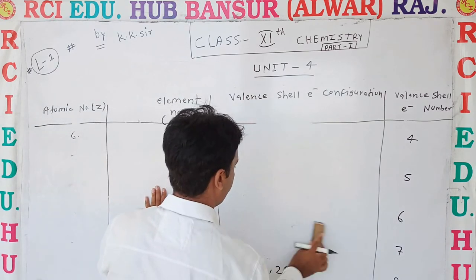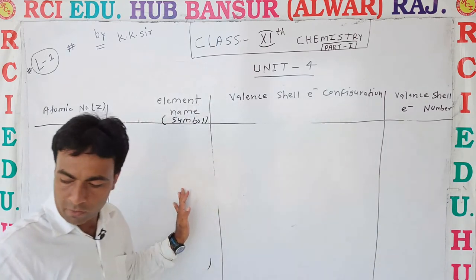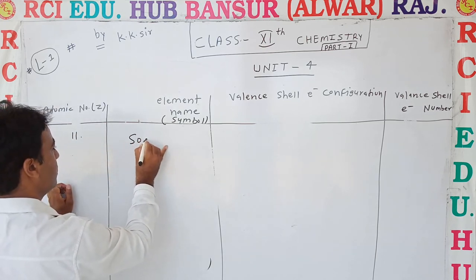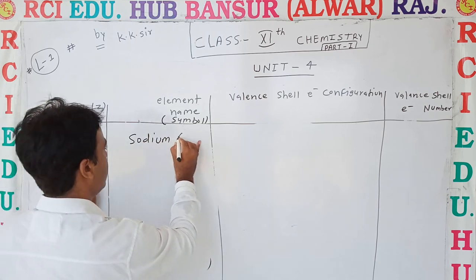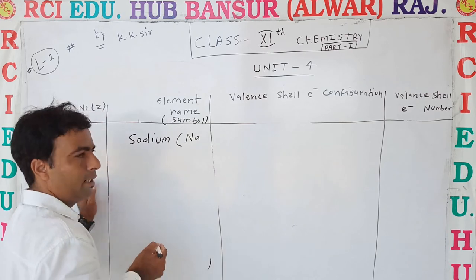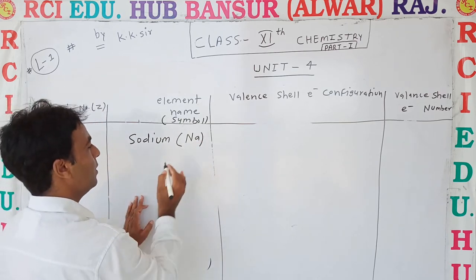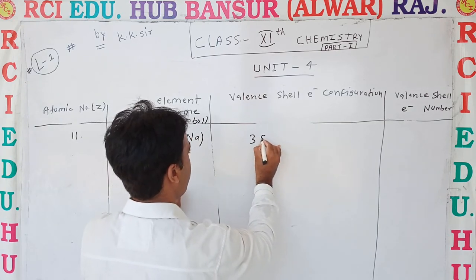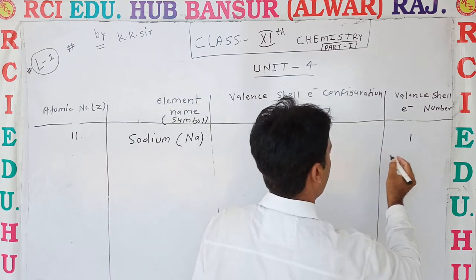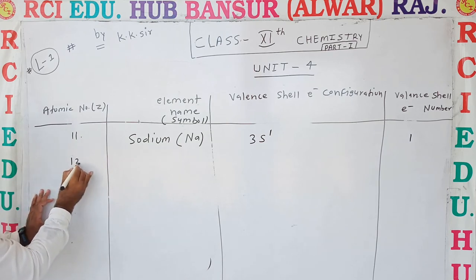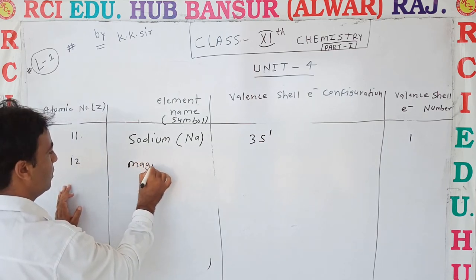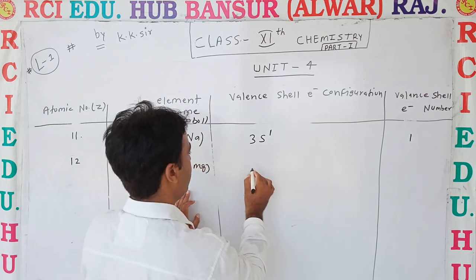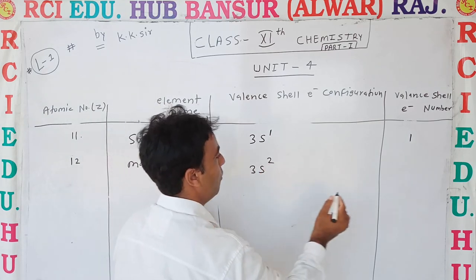Now from atomic numbers 11 to 20. Atomic number 11 is Sodium, also called Natrium, symbol Na. Its valence electron configuration is 3s1, giving 1 valence electron. Atomic number 12 is Magnesium, symbol Mg. Its electronic configuration is 3s2, giving 2 valence electrons.